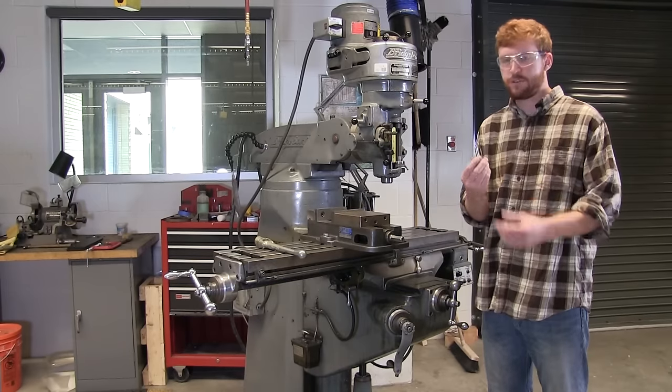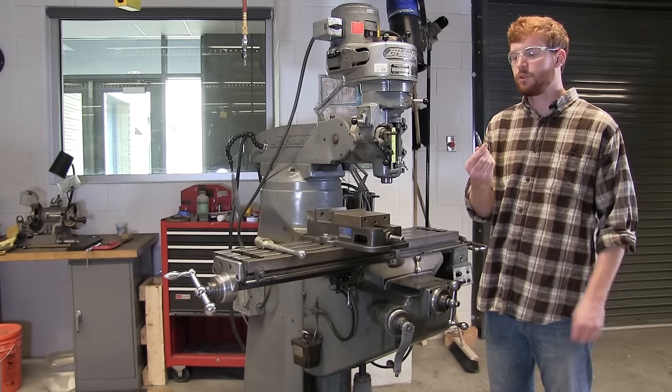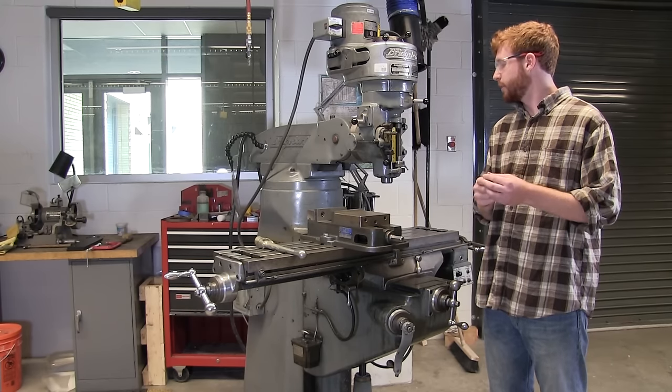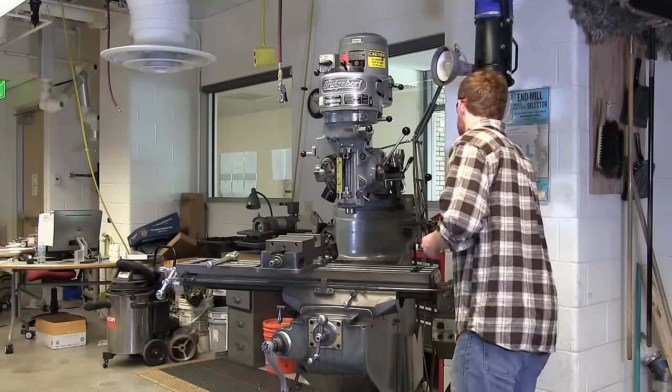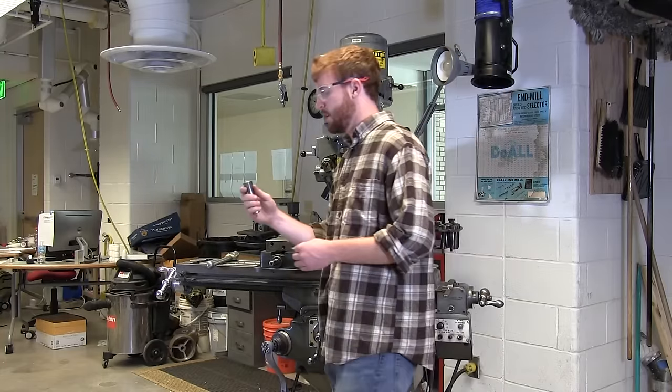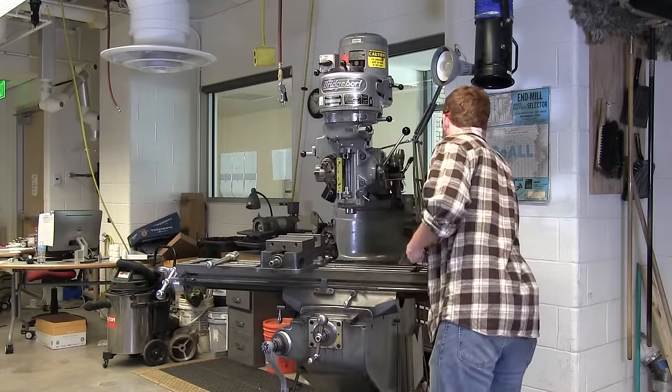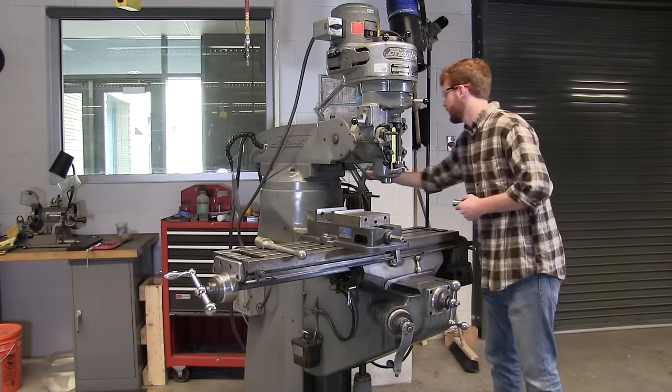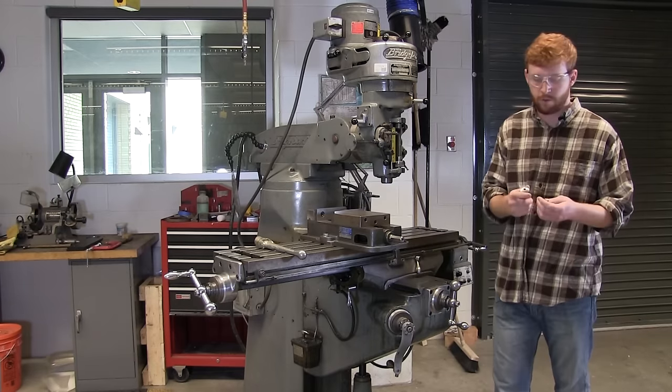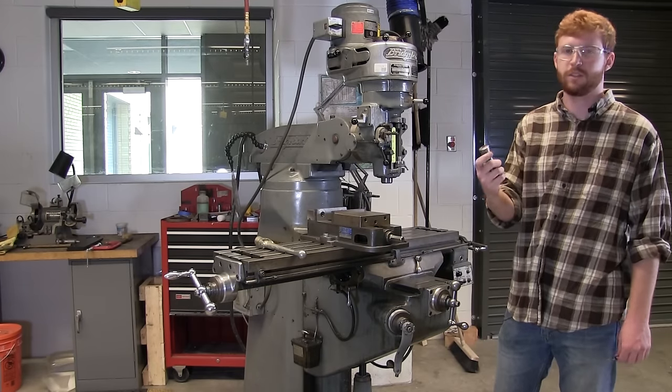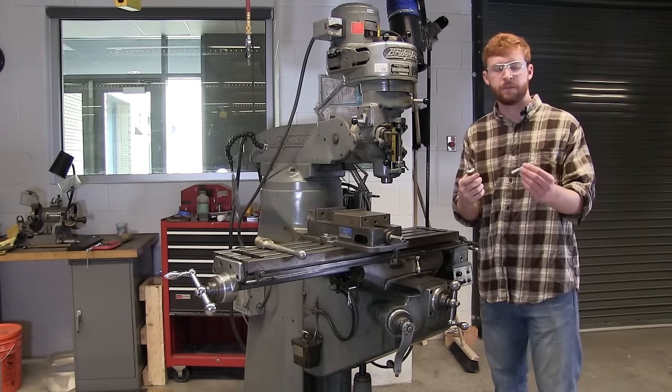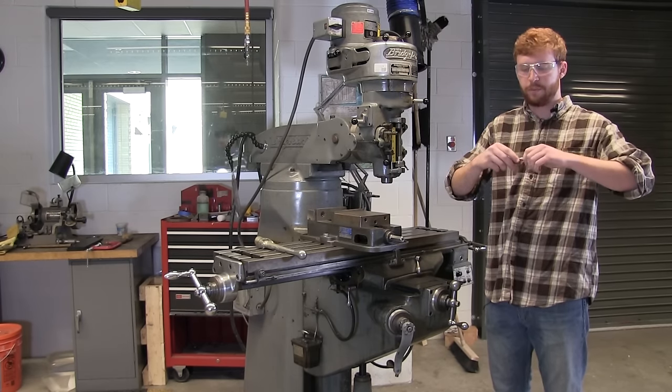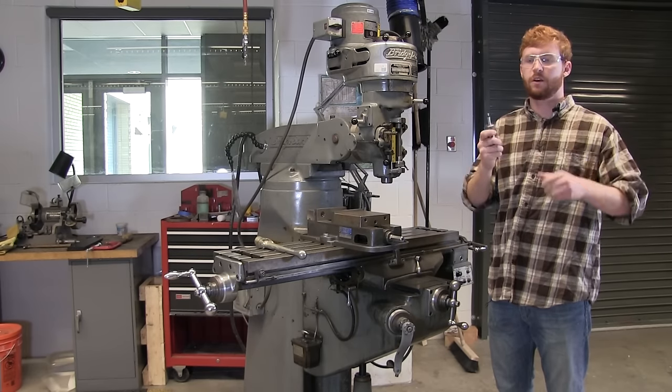I'm going to be loading this edge finder to show how to find the very edge of a part for zeroing it. We have these collets, like I said, each one has a different diameter. We have big, small, each of them should be marked with the correct size that it is. This is a 3/16 inch collet, and this is my 3/16 inch edge finder. So I'll put it in like so. It should be a press fit, pretty snug already.